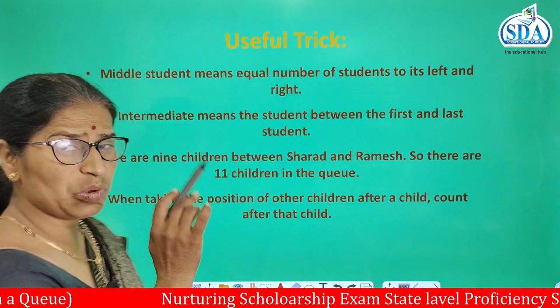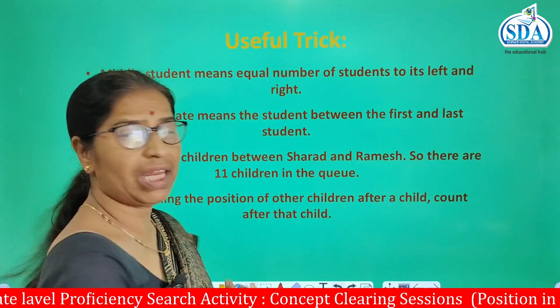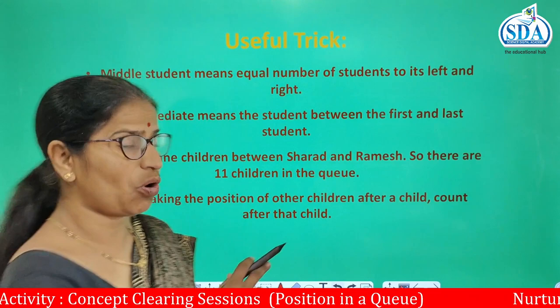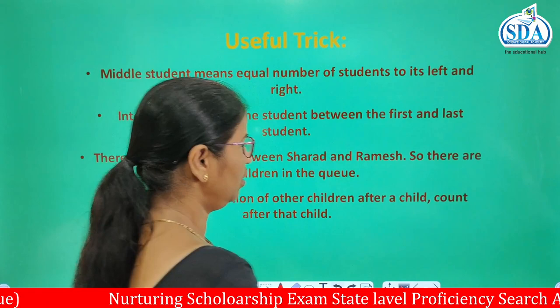For example, suppose there are 9 children between Sharad and Ramesh. So how many are there in total? There are 11 children in the queue. When taking the position of other children after a child, count after that child. This should be remembered while solving the question.